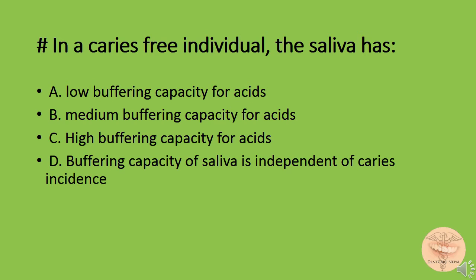In a caries-free individual, the saliva has: option A) low buffering capacity for acids, option B) medium buffering capacity for acids, option C) high buffering capacity for acids, or option D) buffering capacity of saliva is independent of caries incidence. The correct answer is option C: high buffering capacity for acids.